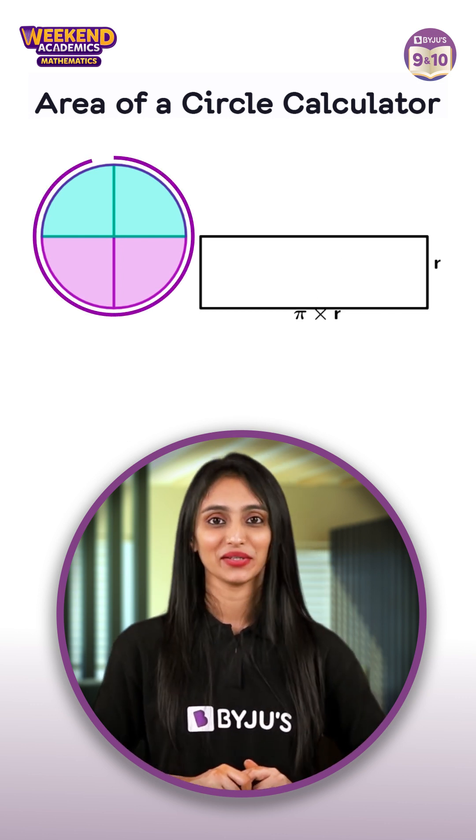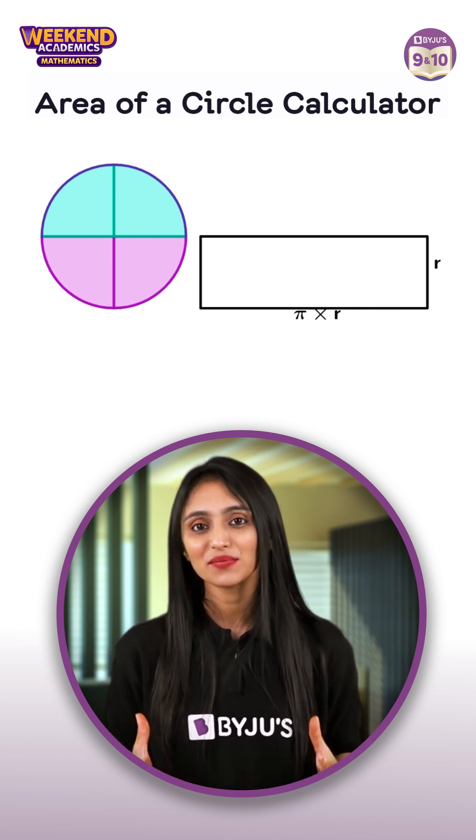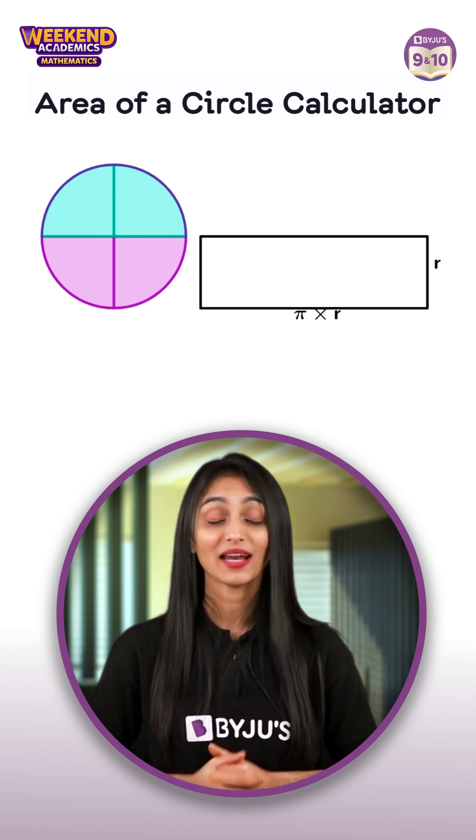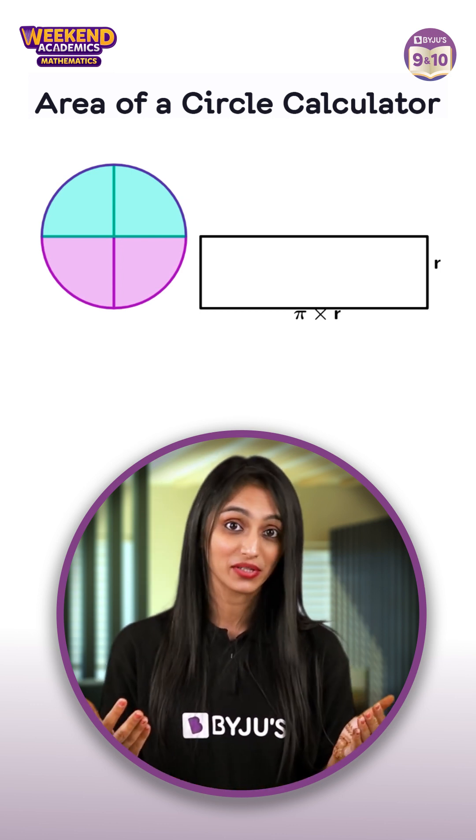Now let's get back to the circle. Let's first assume that the radius of the circle is r, and we have to find out the area of the circle.